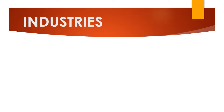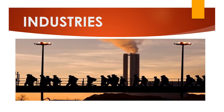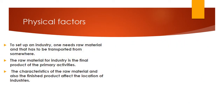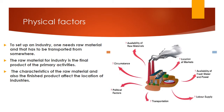The first physical factor is raw material. Any type of industry needs raw material, which has to be transported from one place to another. Raw material for an industry is the final product of a primary activity. The characteristics of the raw material and the finished product both affect the location of the industry.